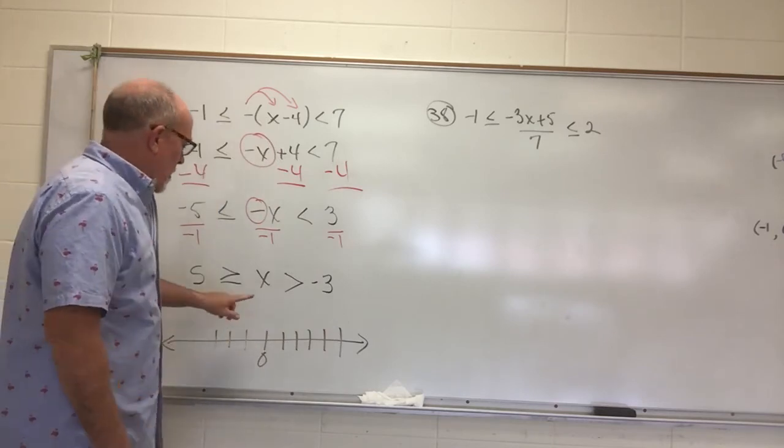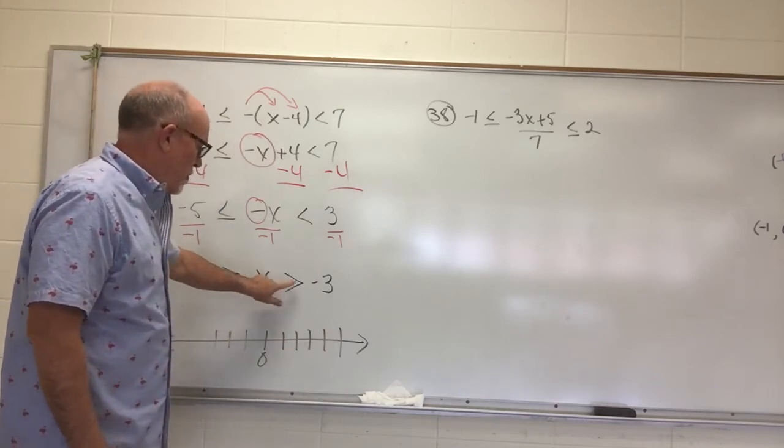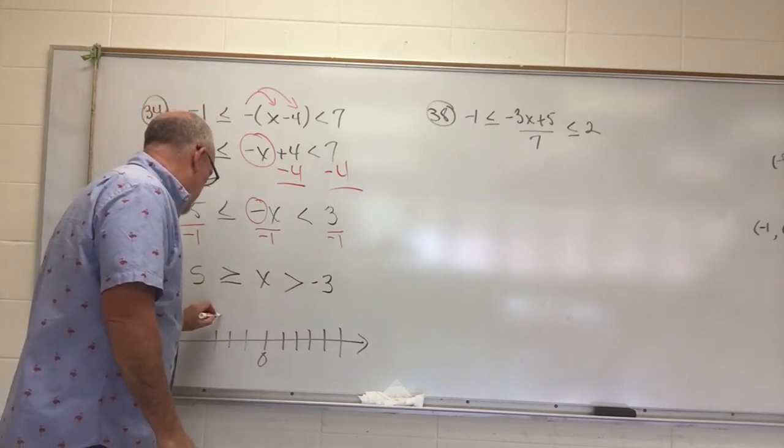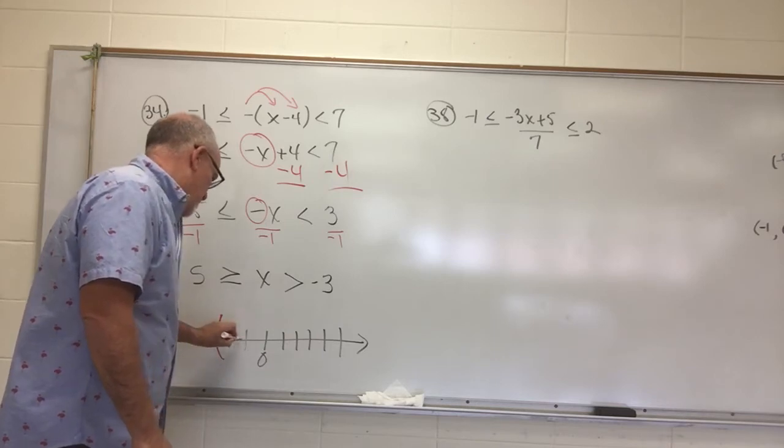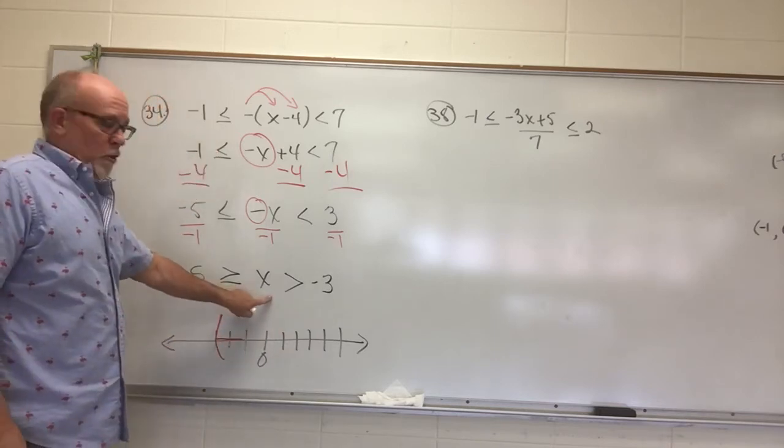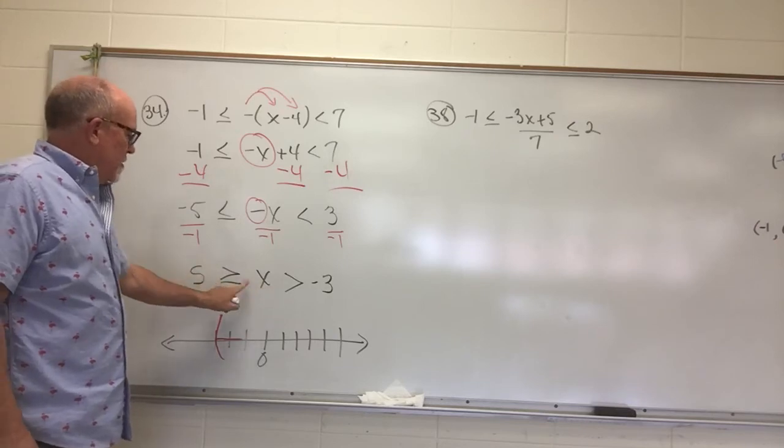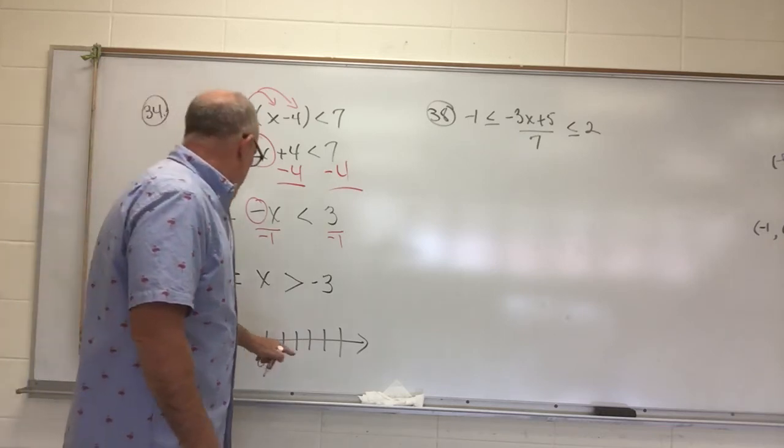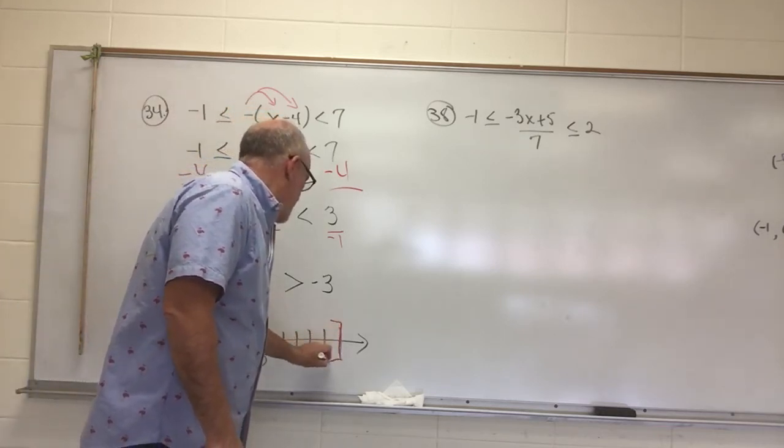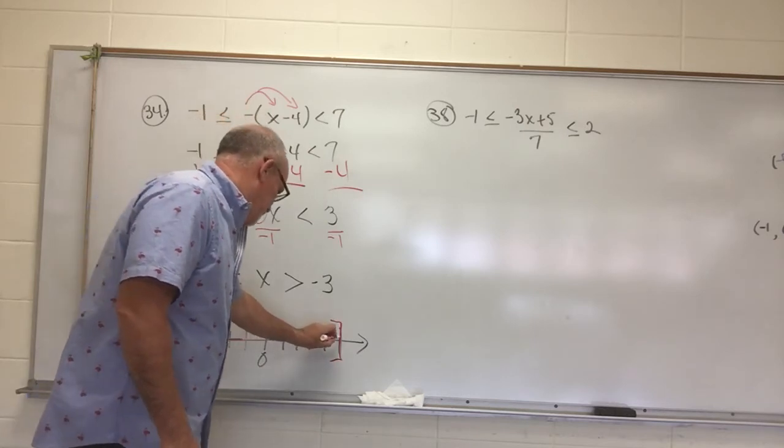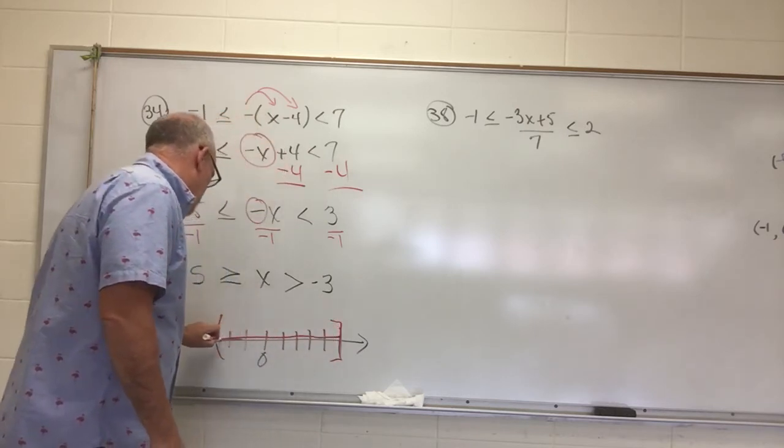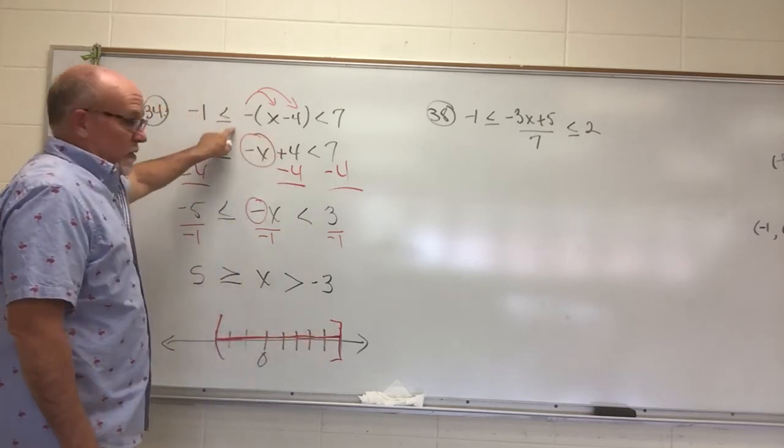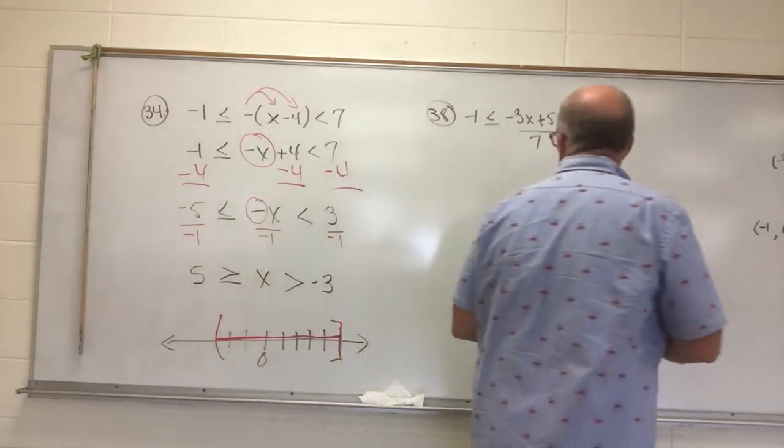So this reads x is larger than negative 3. It's not equal to negative 3, but it's larger than negative 3. So I'm headed this direction or to the right direction. And as you read this, it reads x is smaller than or less than or equal to 5. So I'm going to come down and find 5. It is equal to, so it's a square bracket. And they are headed toward each other. So any number in between should satisfy this inequality. And you can check.